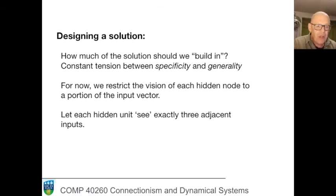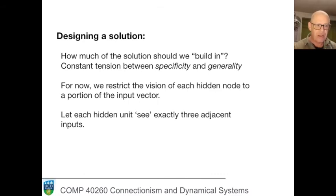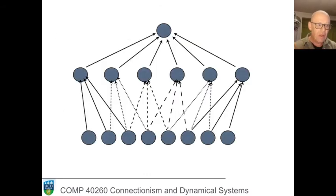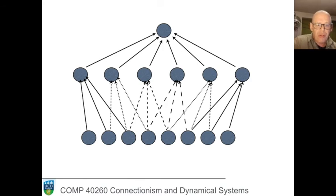What we're going to do now is adopt a radical change to our architecture, one that is also inspired by neurophysiology. We're going to change the wiring — the weights — between the input layer and the hidden layer. Up to now, every input unit has projected to every hidden unit. We're now going to restrict those connections such that only a limited part of the input projects to each hidden unit. Specifically, we're going to allow each hidden unit to have connections to only three sequential input units, and the three that each hidden unit is connected to is different for each one.